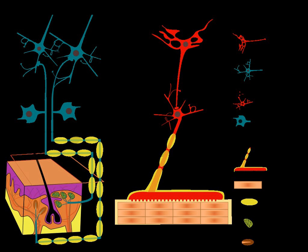A motor synergy is a neural organization of a multi-element system that organizes sharing of a task among a set of elemental variables, and ensures co-variation among elemental variables with the purpose to stabilize performance variables. The components of a synergy need not be physically connected, but instead are connected by their response to perceptual information about the particular motor task being executed. Synergies are learned, rather than being hardwired like reflexes, and are organized in a task-dependent manner — structured for a particular action and not determined generally for the components themselves.